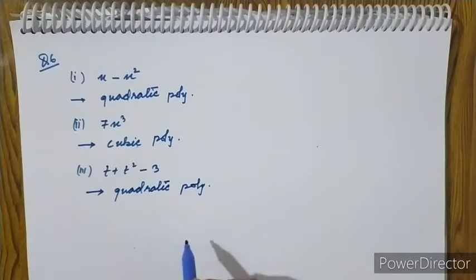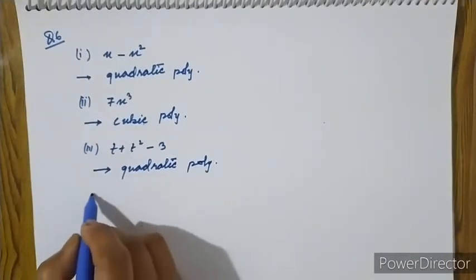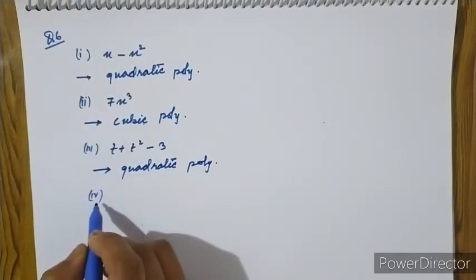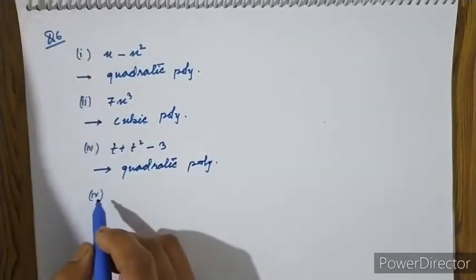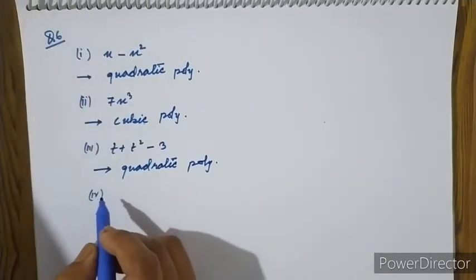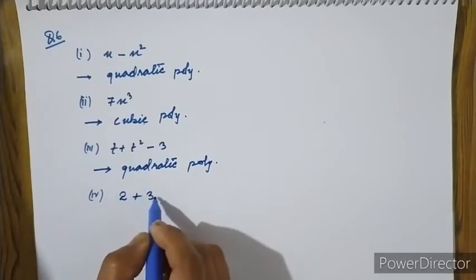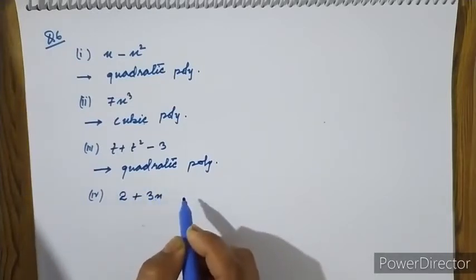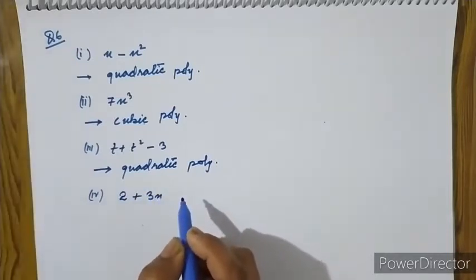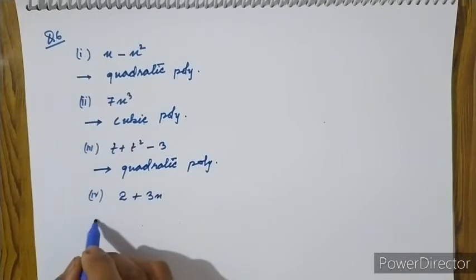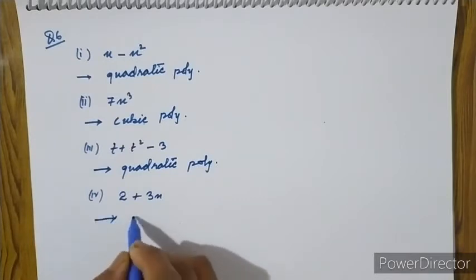Roman numeral 4: 2 plus 3x. The degree is 1, so this is a linear polynomial.